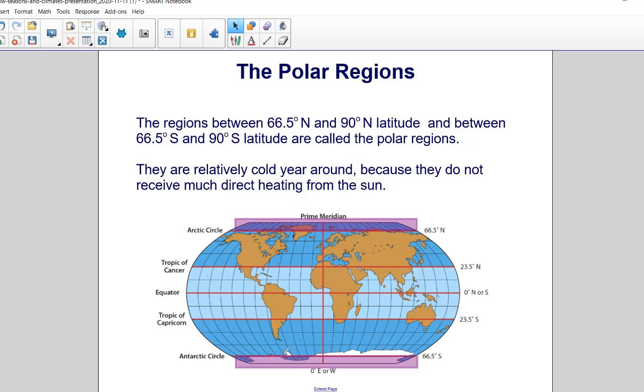The regions between 66.5 degrees north and 90 degrees north latitude and between 66.5 degrees south and 90 degrees south latitude are called the polar regions. They are relatively cold year-round because they do not receive much direct heating from the Sun.